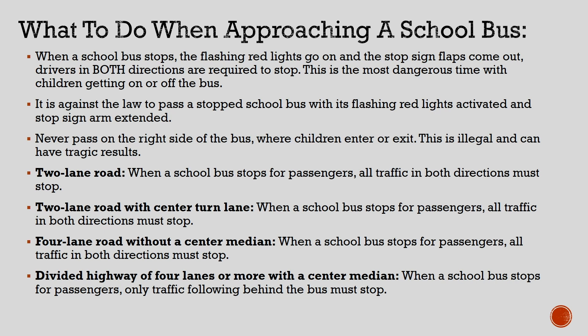When a school bus stops, the flashing red lights go on and the stop sign arms come out. Drivers in both directions are required to stop — this is the most dangerous time, with children getting on or off the bus. It is against the law to pass a stopped school bus with its flashing red lights activated and stop sign arm extended. Never pass on the right side of the bus where children enter or exit. If on a two-lane road or a two-lane road with a center turn lane, all traffic in both directions must stop. If on a four-lane road without a center median, all traffic in both directions must stop. If on a divided highway of four lanes or more with a center median, only traffic following behind the bus must stop.